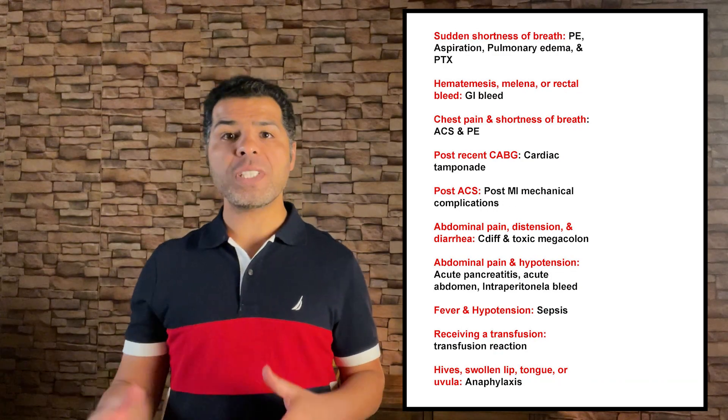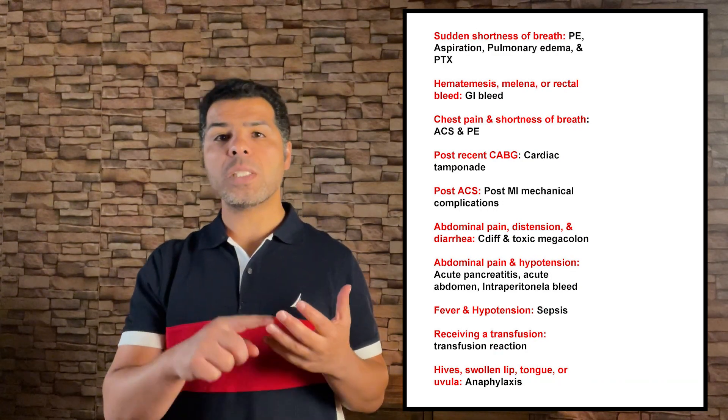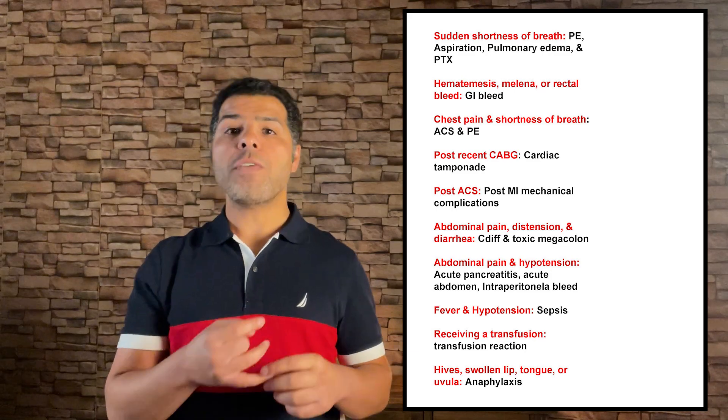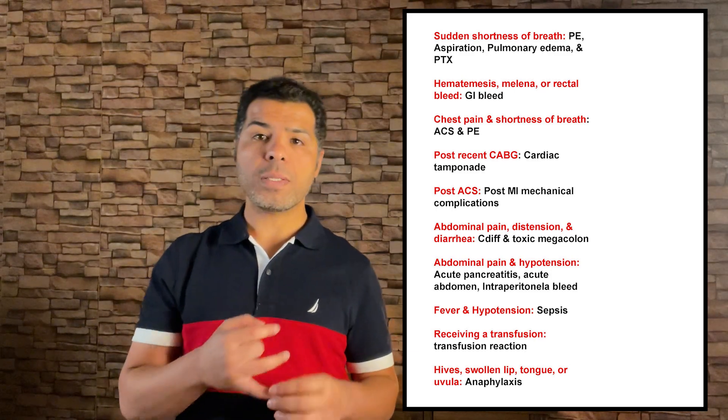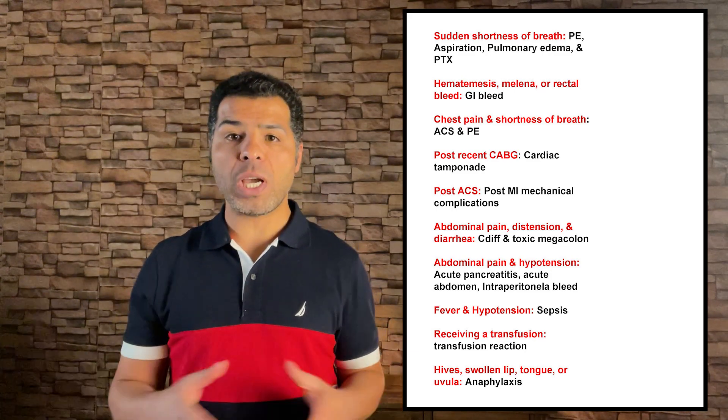Now let me provide some clinical clues. If sudden shortness of breath and hypoxia, think of pulmonary edema, aspiration pneumonia, PE, or ARDS. If hematemesis, melena, or rectal bleed, think of GI bleed.